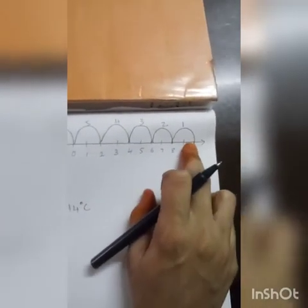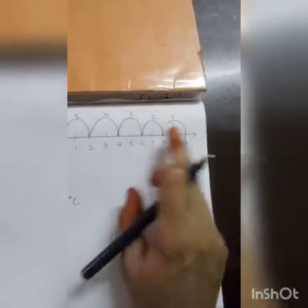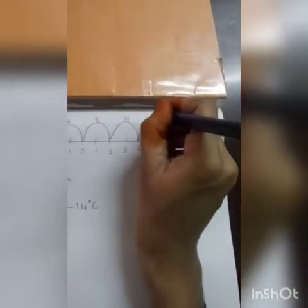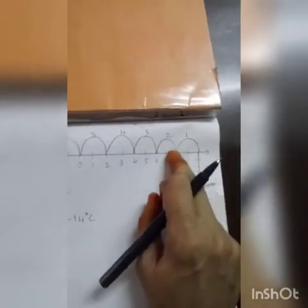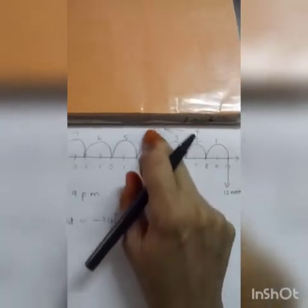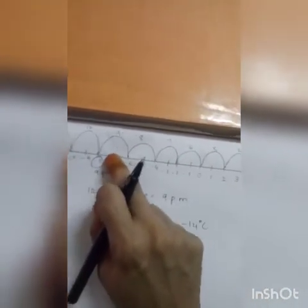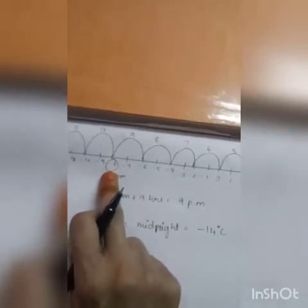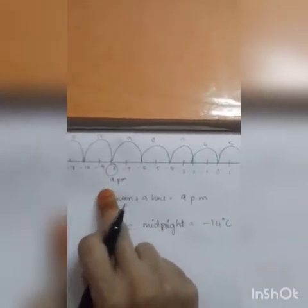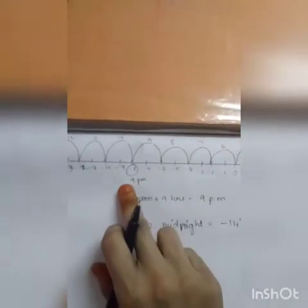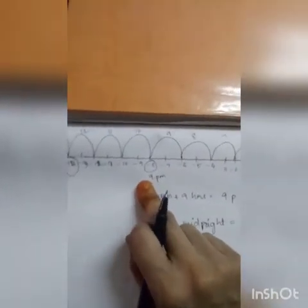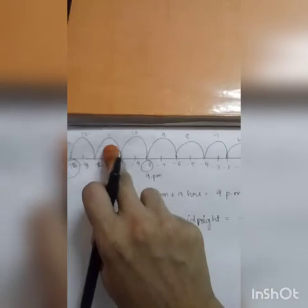At 12 noon we started our journey, decreasing 2 degrees Celsius for every 1 hour — decreasing means going towards the left side on the number line. Shifting until minus 8 degrees Celsius, it took till 9 o'clock. So at 9 o'clock we are reaching minus 8 degrees Celsius. Then at 10 o'clock, 11 o'clock, 12 o'clock midnight — at 12 o'clock midnight the temperature is minus 14 degrees Celsius.